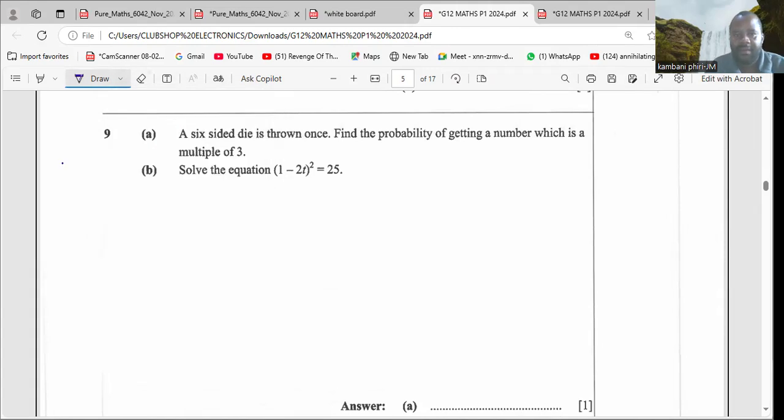We are saying a six-sided die is thrown once. Find the probability of getting a number which is a multiple of three. When a die is thrown down...